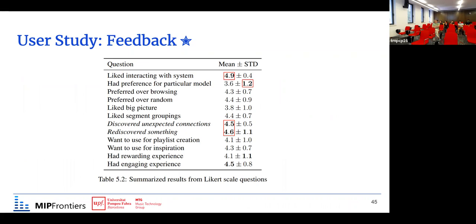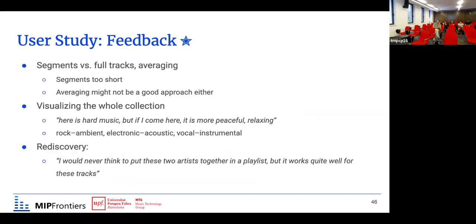Some participants after finishing the task continued using the system to create more playlists. We asked follow-up questions on a five-point Likert scale. While the sample size is quite small, there are high values for questions related to whether participants discovered unexpected connections or rediscovered music — which was the goal of this interface — and whether they liked interacting with the system. There is quite a big standard deviation for preference of a particular model. We also performed topic analysis identifying recurring themes across all participants, which started repeating after about six participants.